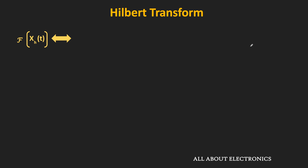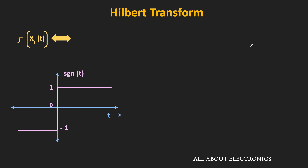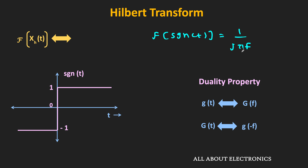In an earlier video, we have already seen the Fourier transform of some useful functions, including the Fourier transform of the signum function. The Fourier transform of sgn(t) is equal to 1/(jπf). Using the duality property of the Fourier transform, we can find the Fourier transform of 1/(πt).